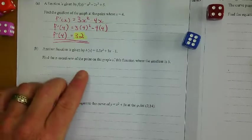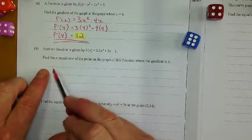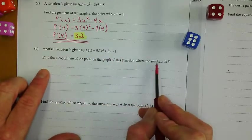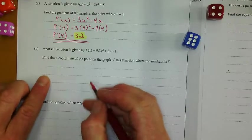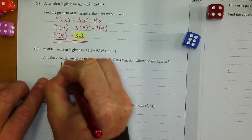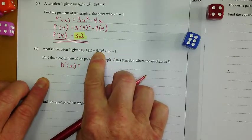All right, moving on to the next one. Another function is given by this polynomial right here. Find the x-coordinate of the point on the graph. So this one's a little bit different where we have to find the x-coordinate and not the gradient. So of course my first step here is to derive it again. 0.5 times 2 is 1.